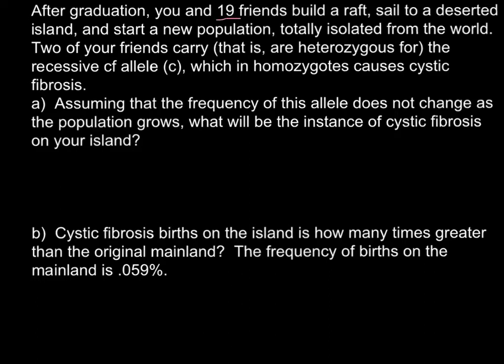First of all, we have 19 people plus you, so 20 people all together, that would have 40 alleles. Because we are diploid, we have two sets of chromosomes, one we inherited from our mother's side, one from our father's side. So all together, that means we have 40 chromosomes.